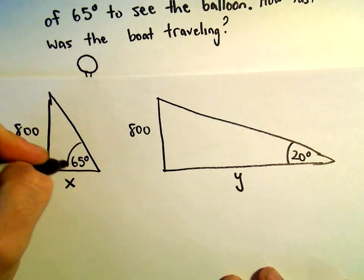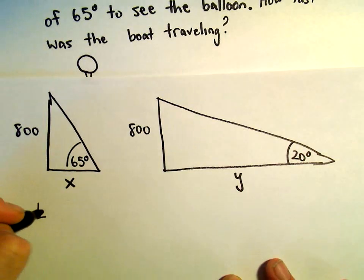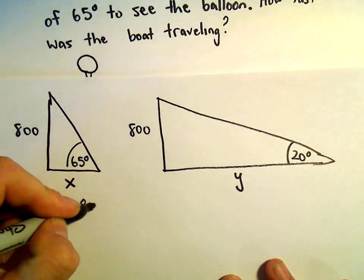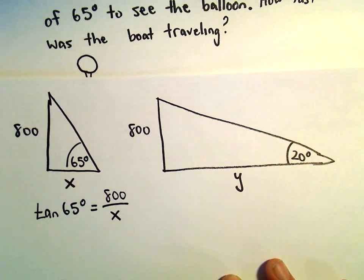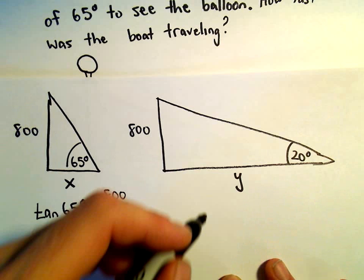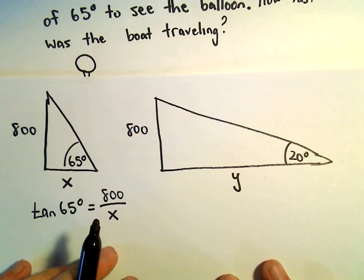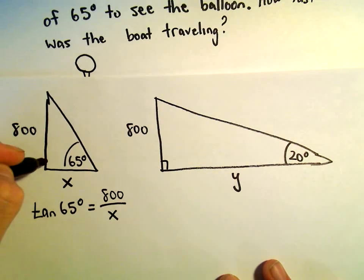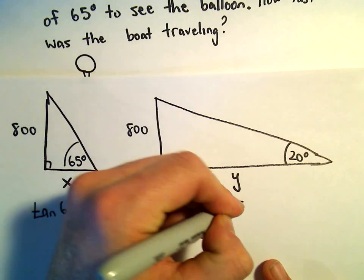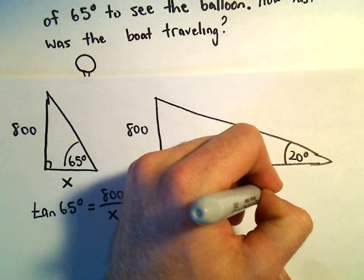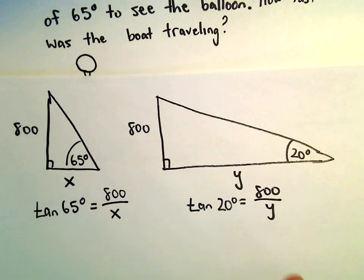If you think about our trig functions, we can say tangent of 65 degrees would be the opposite, which is 800, over the adjacent, which would be x. Likewise, for our other right triangle here, we could say that tangent of 20 degrees is going to be the opposite over the adjacent.